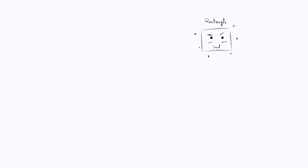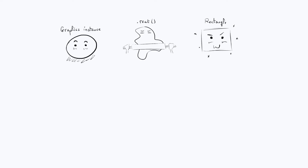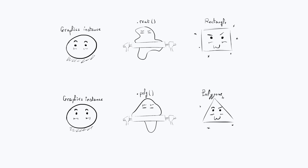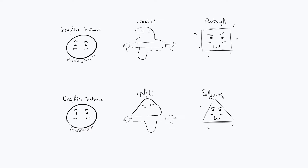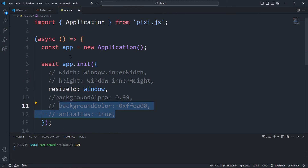To create a rectangle, for example, we need to create a Graphics instance, then transform it into a rectangle using a method called rect. To create a triangle, once again we need to create a Graphics instance, then transform it into a triangle using the polygon method, and so on. Now let's put that into practice.